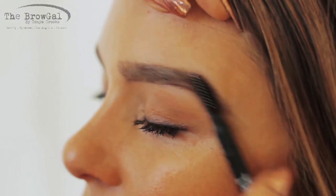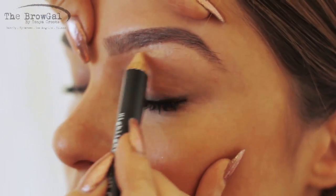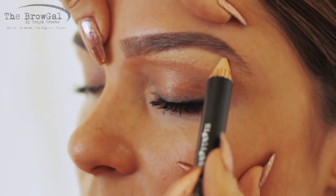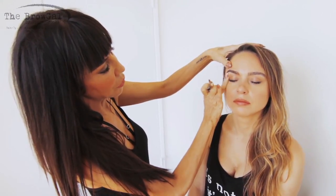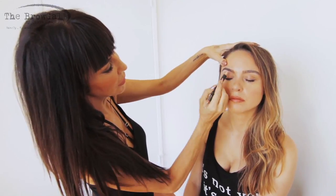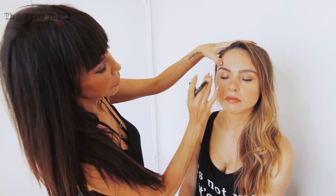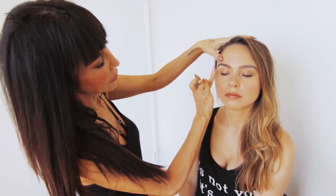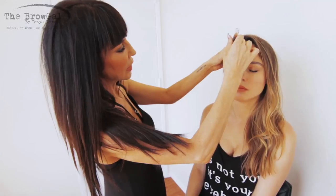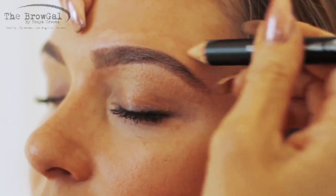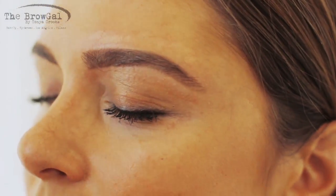Now it's time for the highlighter. We have one end that is the matte end, which can be used as a matte highlighter or concealer, and the other end is the shimmer, which can be used all over the face. I'm going to start with the matte end here and start one third away from where the brow starts to the end. You can either use a finger or your brush — go through the brow and blend. We're going to do the same thing at the top, dotting it to highlight the top of the brow and blending.